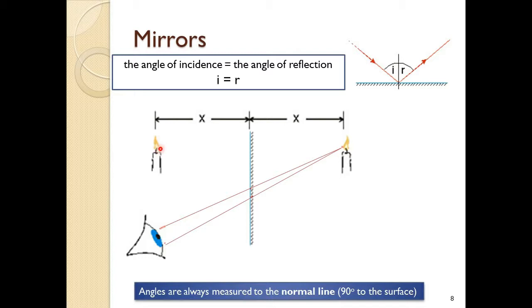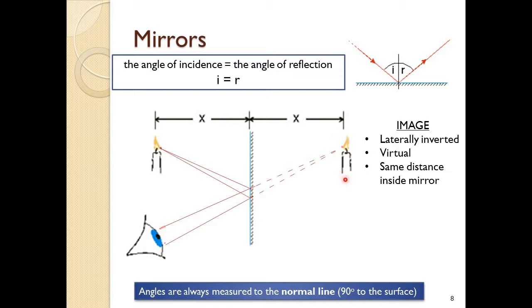If you put your pencil at the object position and join a line to where the ray hits the mirror, you get an accurate reflection. These rays reflect off the mirror and go to the eye. The rays behind the mirror aren't real — they're called virtual rays and should be drawn dotted. The diagram is now complete: the image is inside the mirror, the same distance away, laterally inverted (swapped left to right), and virtual — the image can't be formed on a screen.